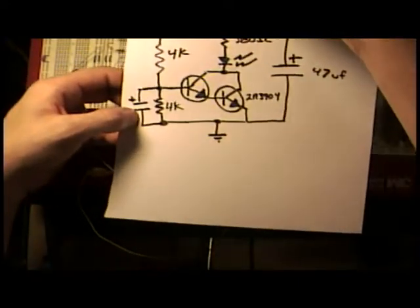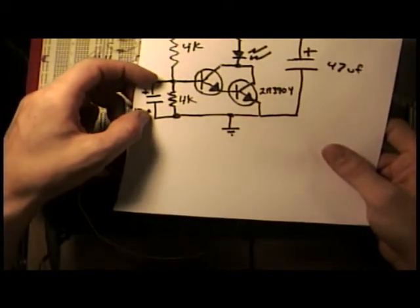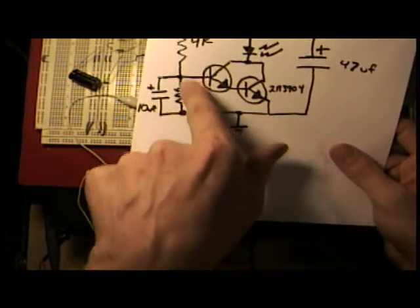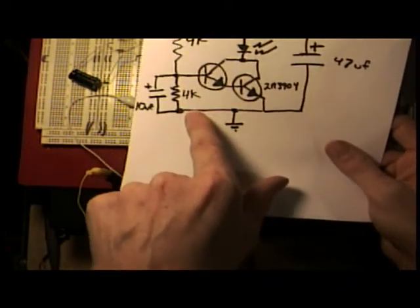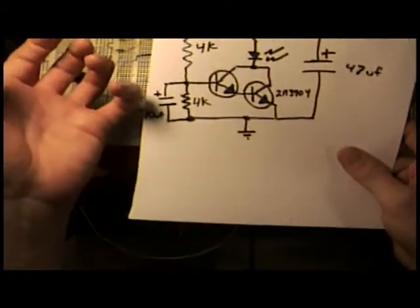When the voltage is removed, now this capacitor has stored up a small charge, which is keeping the LED on for a moment. And this bleed resistor, this 4K here, slowly bleeds it down so the LED turns on slow and turns off slow.